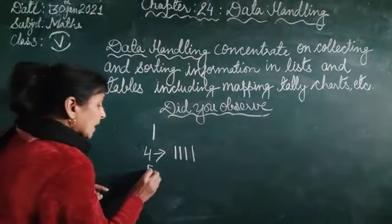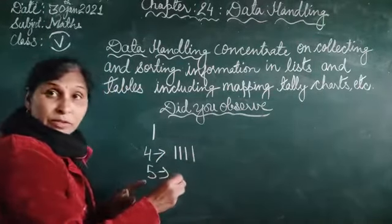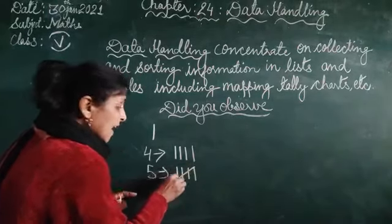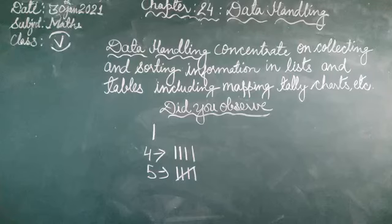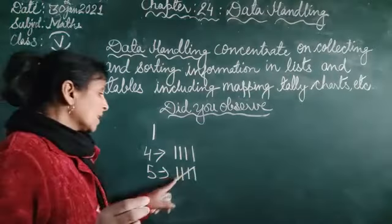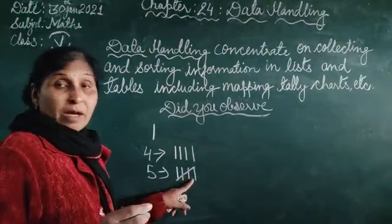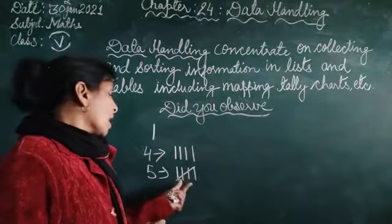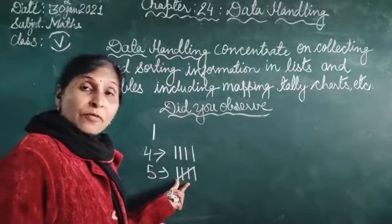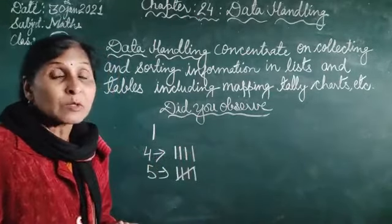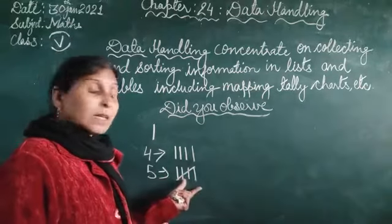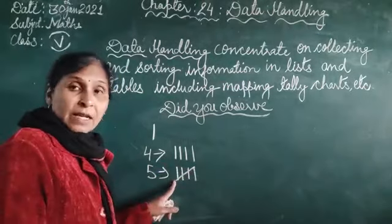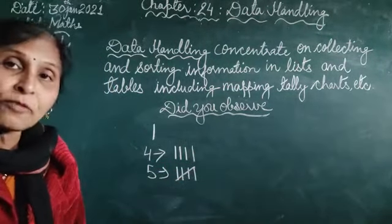For 5th tally marks. For 5th tally marks we can here draw these 4 lines and slash across the 4 tally marks. That is the 5 tally marks we can draw like this. So in this way we can see the 5th tally marks.